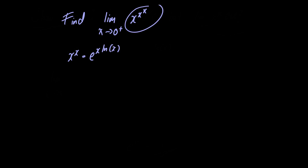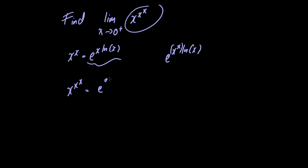This means that we can rewrite x raised to x raised to x as e raised to e raised to x times the natural logarithm of x, and this is all multiplied by the natural logarithm of x.